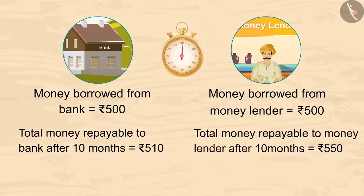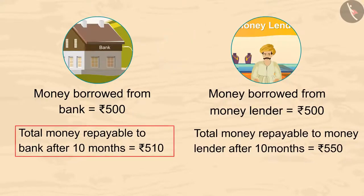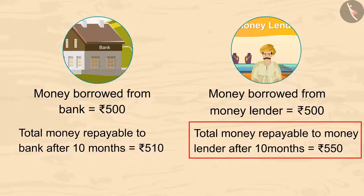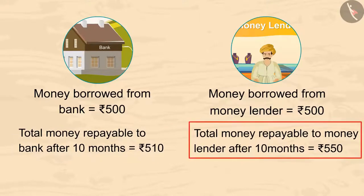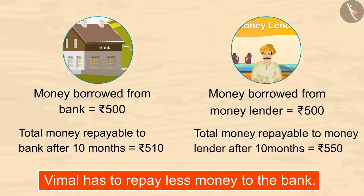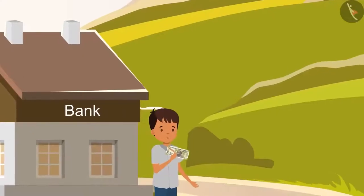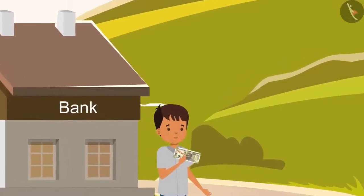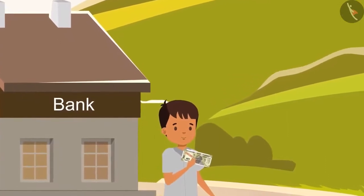You can pause the video to find out the answer. After 10 months, Vimal will repay 510 rupees to the bank, while 550 rupees to the money lender. So Vimal has to repay less money to the bank. Have you guessed the same? Vimal is good at maths. That's why he has borrowed money from the bank itself.